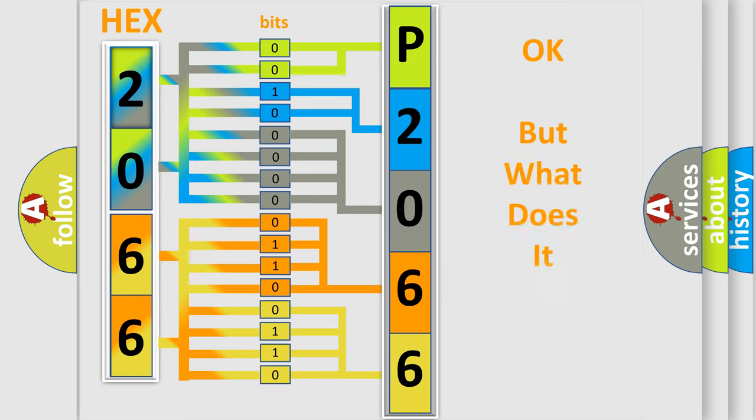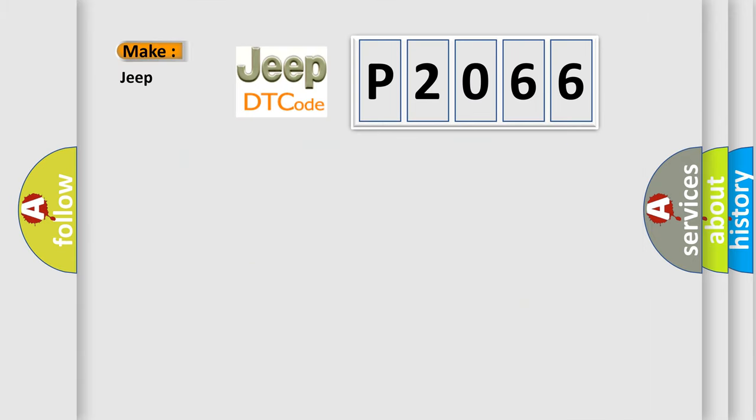The number itself does not make sense to us if we cannot assign information about it to what it actually expresses. So, what does the diagnostic trouble code P2066 interpret specifically for Jeep car manufacturers?